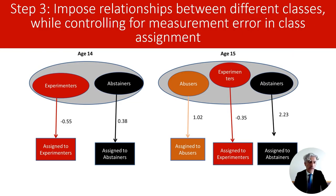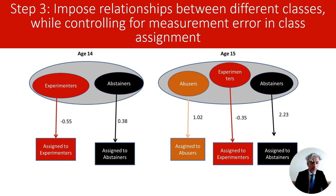As illustrated in the previous presentation, once we have chosen optimal measurement models at each time point, we can use the latent class memberships — estimated assignments of participants — as imperfect indicators of latent classes, feeding the model information about the extent of uncertainty in assignment. This information is represented by classification log odds parameters extracted from the optimal measurement models, which software like Mplus will provide without needing to calculate them manually. These log odds parameters are indicated in the figure beside the arrows.